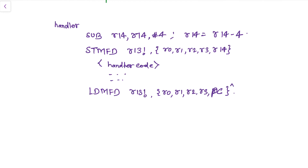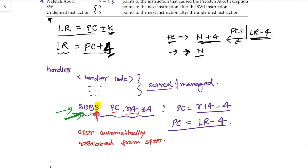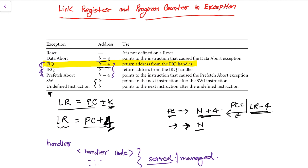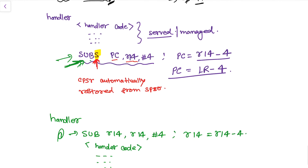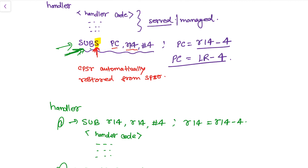The caret sign at the end is very important — it makes sure that the CPSR is restored from SPSR, serving the same purpose as the suffix S in the earlier instruction set examples. This is all about how the link register and program counter change and behave when an exception occurs. Thank you for watching — please subscribe to the channel so you can get updates directly in your inbox.